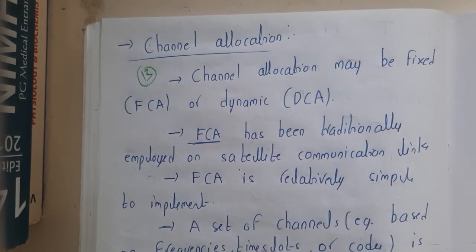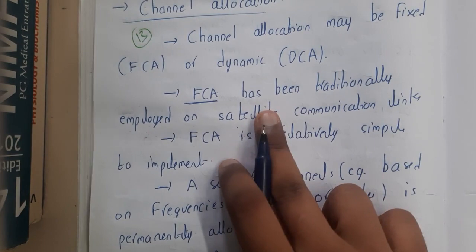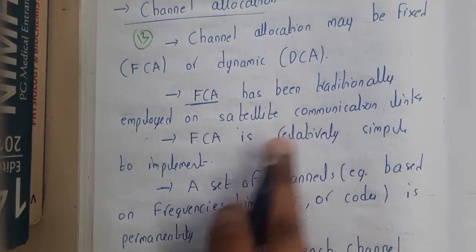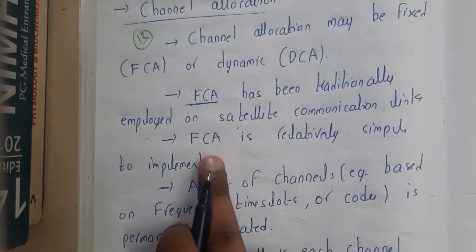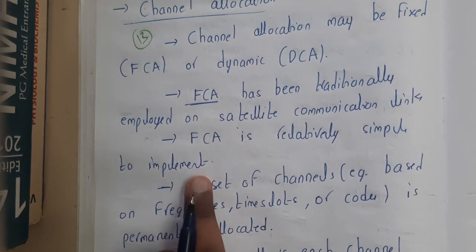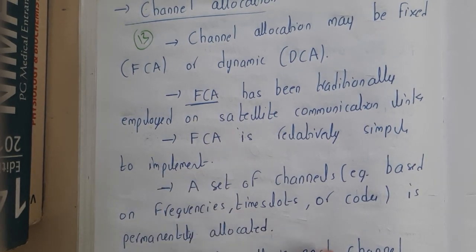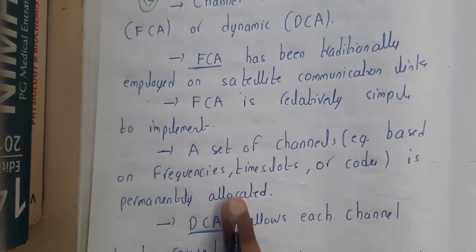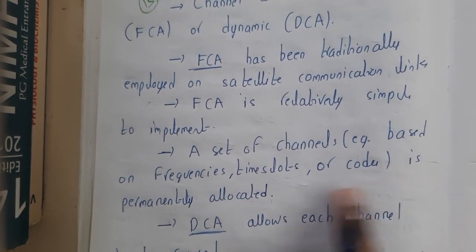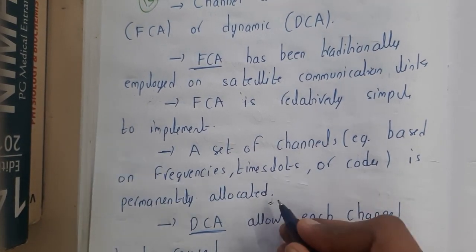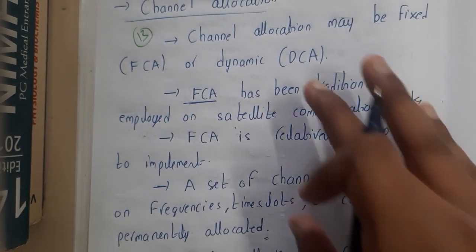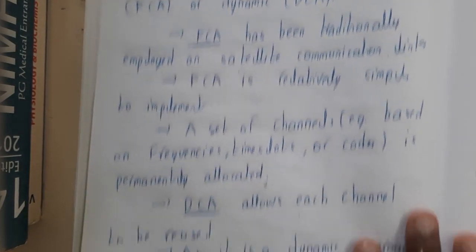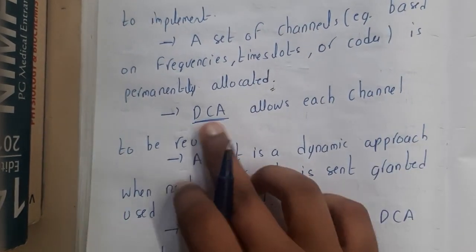FCA has been traditionally employed on satellite communication links. FCA is relatively simple to implement — a set of channels, for example based on frequency, time slot, or code, is permanently allocated. Let us go through the definitions and then I'll explain with a real-time example.